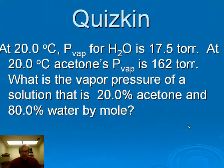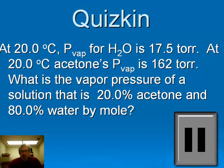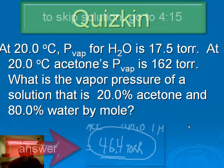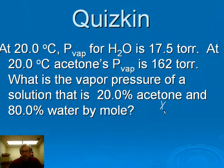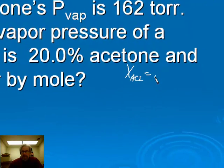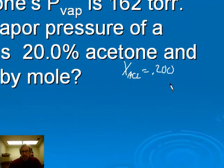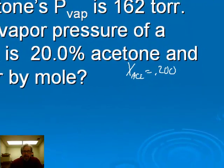For the second quizkin, we're at 20 degrees C. The vapor pressure for pure water is 17.5 torr, and the vapor pressure for acetone is 16.2 torr. We want to know the vapor pressure of a solution that's 20% acetone and 80% water by mole. So the mole fraction of acetone is 0.200 and the mole fraction of water is 0.800.